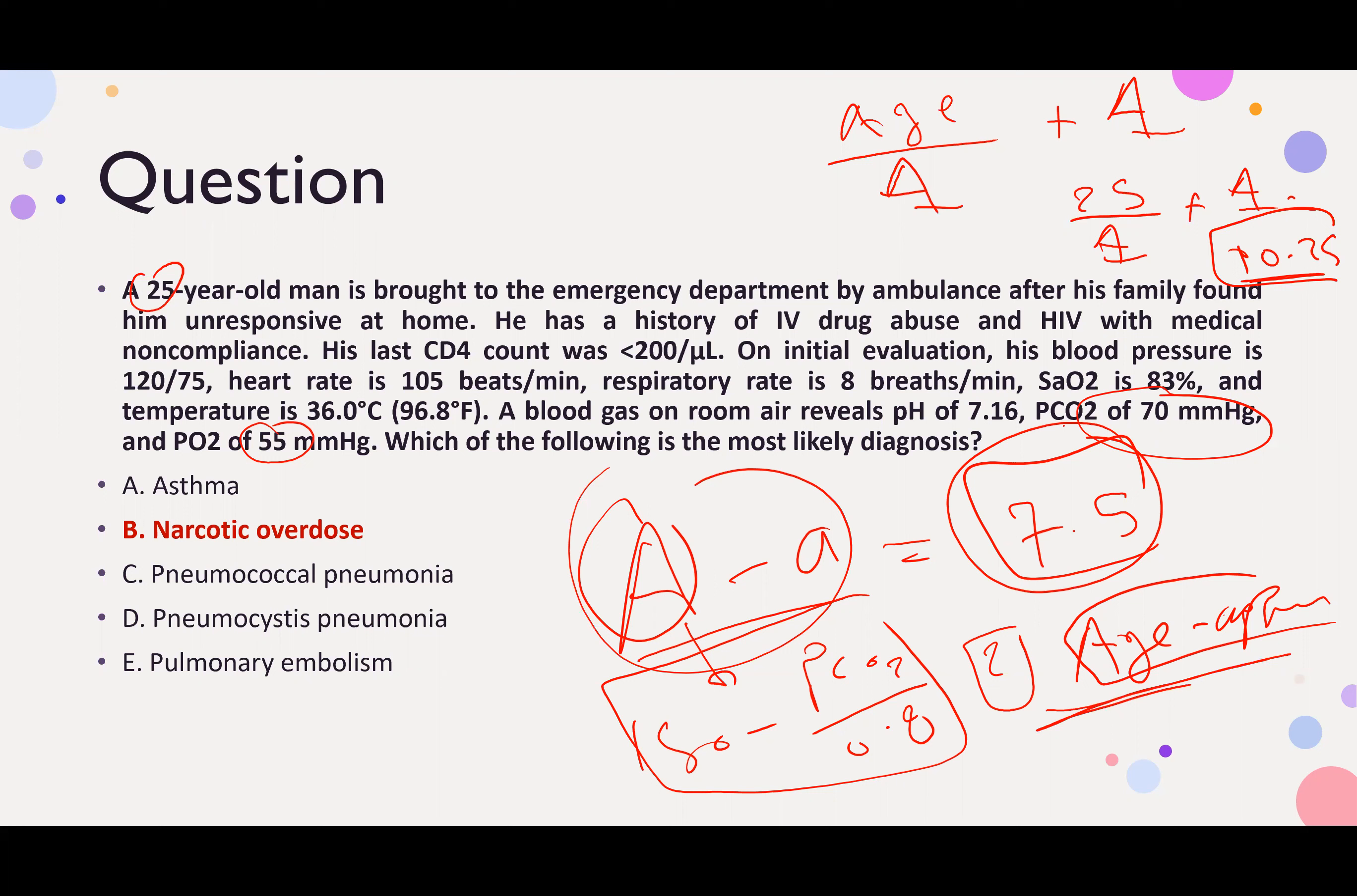It doesn't match his age, but it's not high. So this patient does not have high AA gradient. It's supposed to be 10 and it's 7.5. So this is actually low.